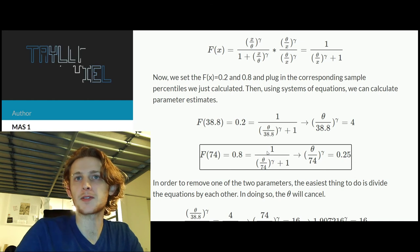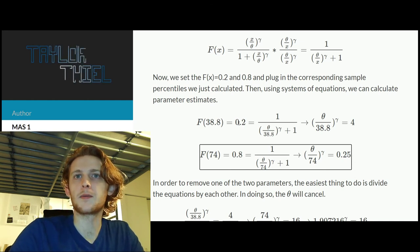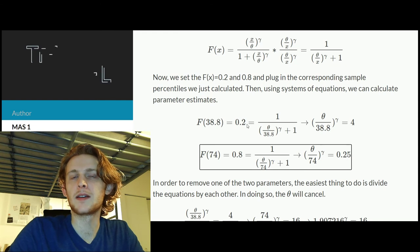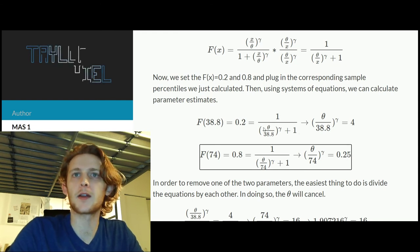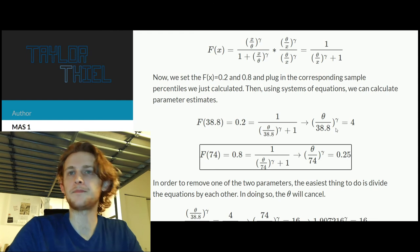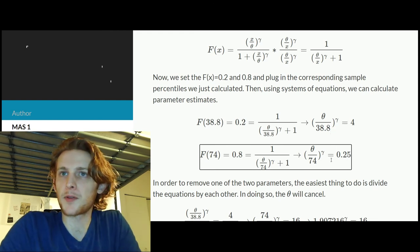So we say 0.2 is equal to observing an x value of 38.8, and then we do the exact same thing with the 74. And now we have a system of equations. So what I do here is I multiply both sides by this denominator, then 1 divided by 0.2 is going to be 5, and then subtract 1 is 4, and then all you're left with is this term on the left.